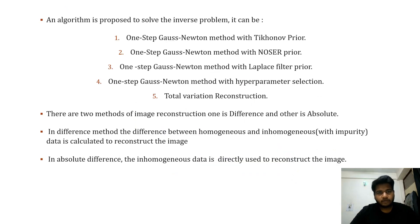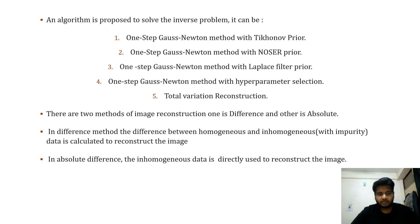Now we look at the inverse problem. An algorithm is proposed to solve it, which can be one of the following: one-step Gauss-Newton method with Tikhonov prior, one-step Gauss-Newton method with Noser prior, one-step Gauss-Newton method with Laplacian prior, one-step Gauss-Newton method with hyperparameter selection, or total variation reconstruction.